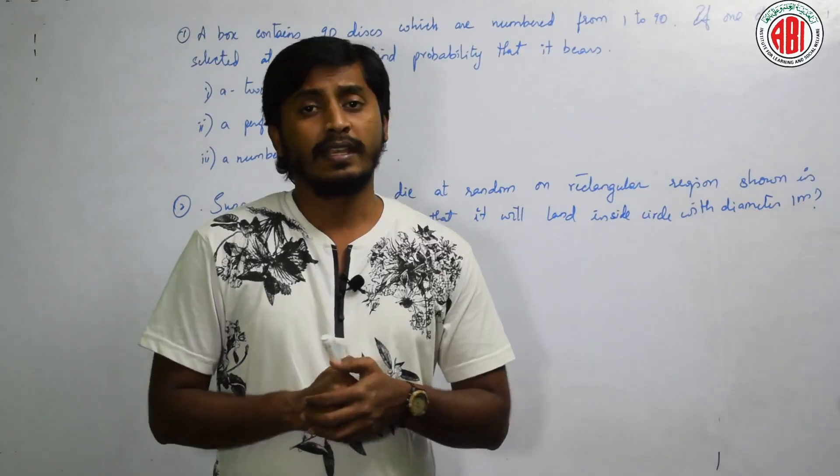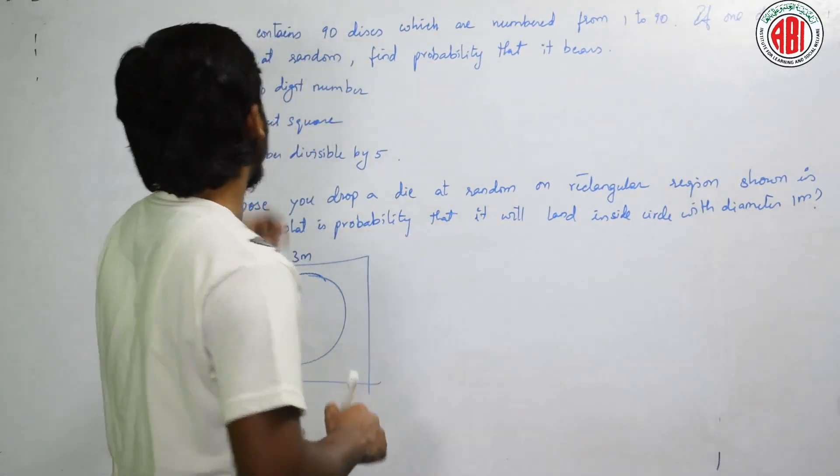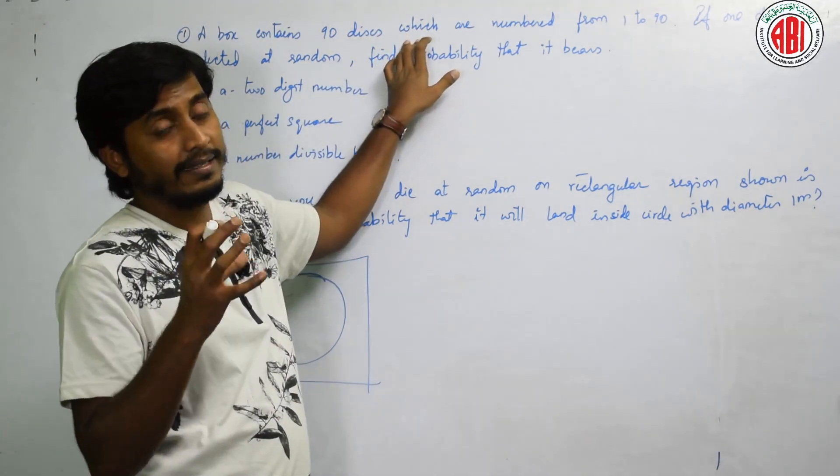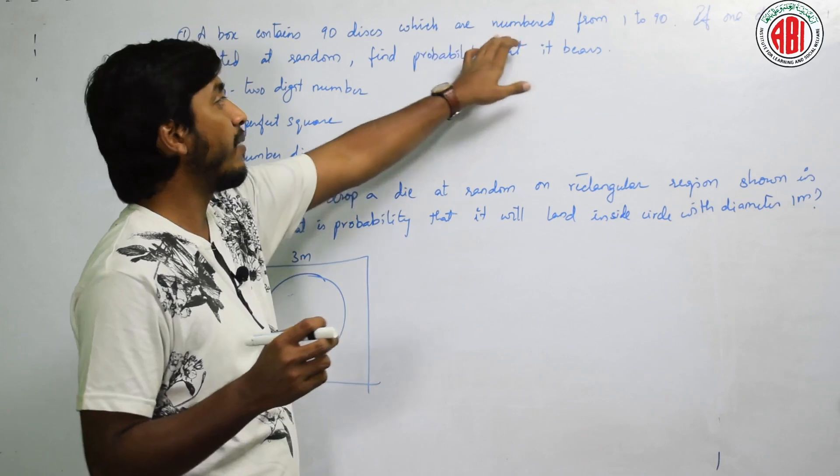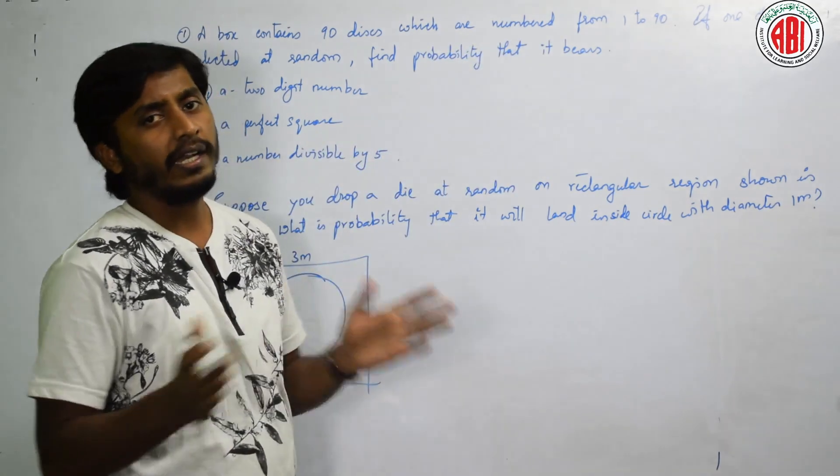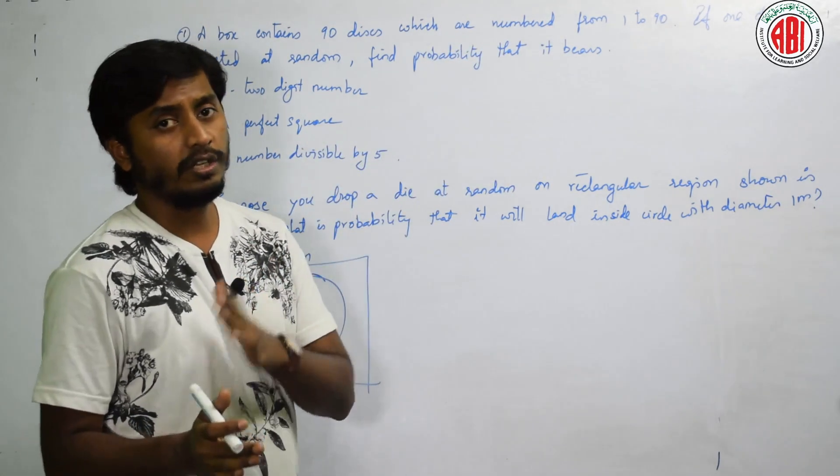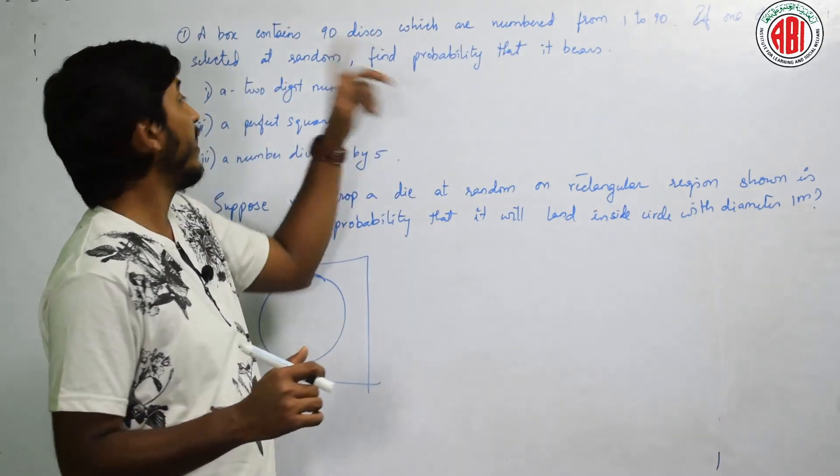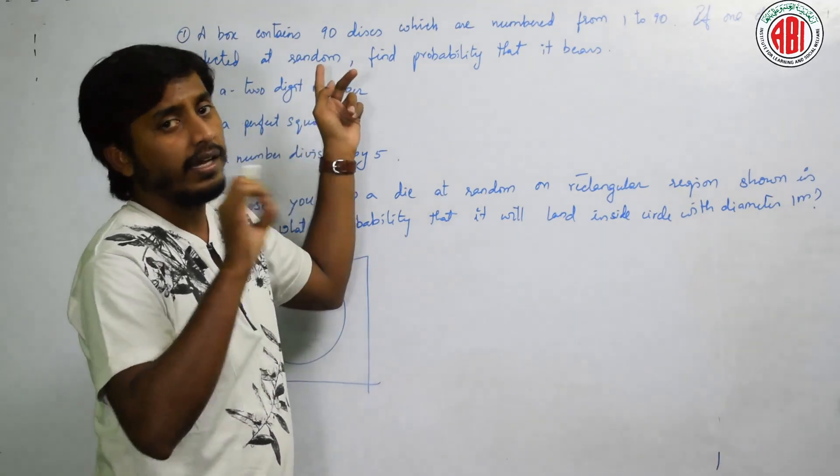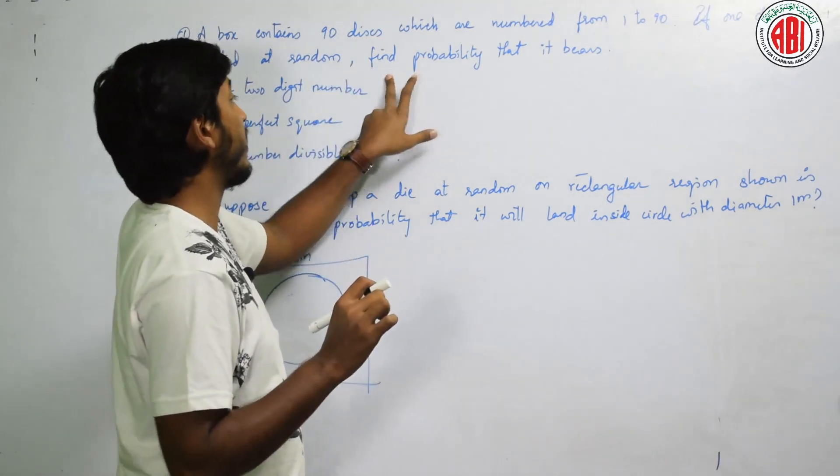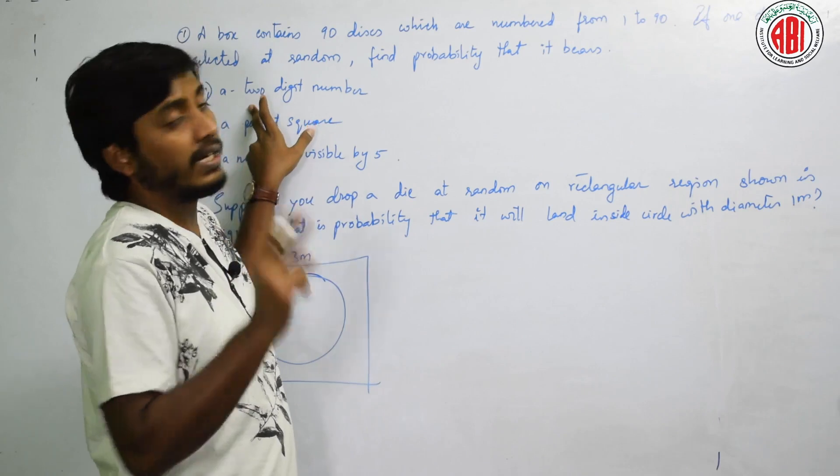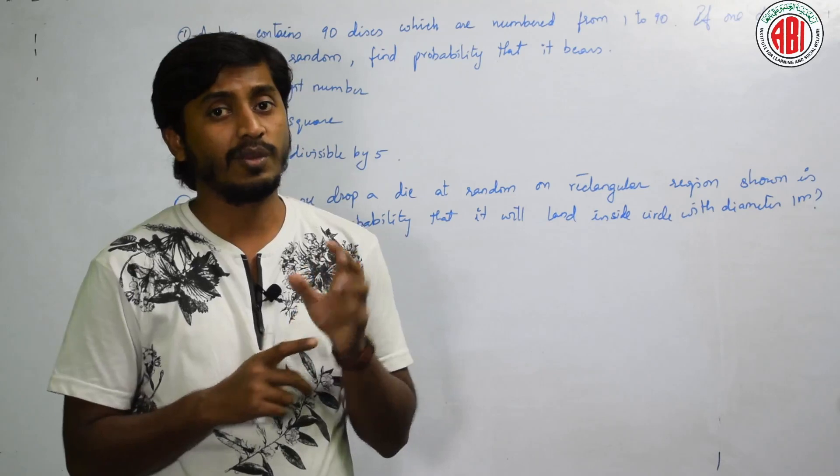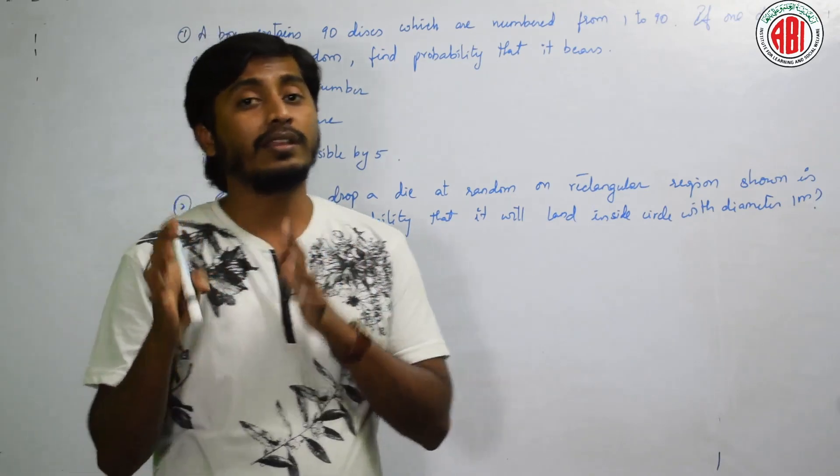See here, the next question given here is: A box contains 90 discs which are numbered from 1 to 90. If one disc is selected at random, find the probability that it bears a 2 digit number. Now tell me, 2 digit number means it starts with 10 and it ends with 99.